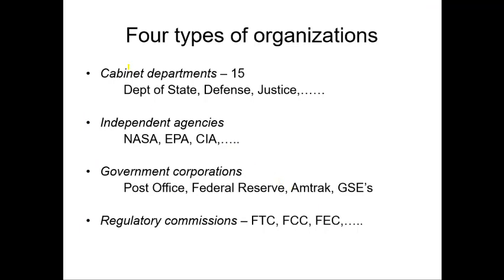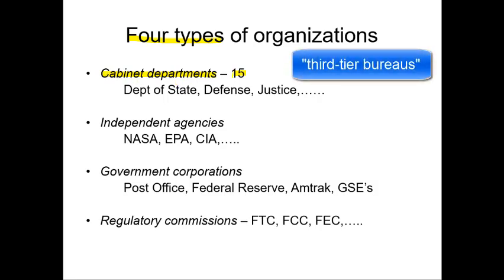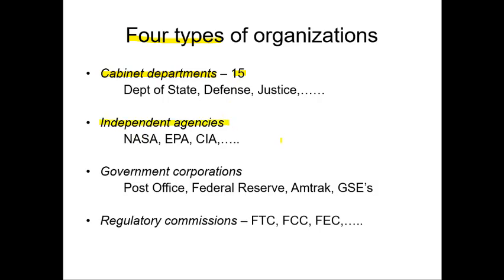There are four basic types of organizations in the bureaucracy — the executive branch. First, cabinet departments, and there are 15 cabinet-level departments. Second, independent agencies in the executive branch. Third, government corporations — the post office is one of those. And fourth, regulatory commissions. We'll look at each of those in more detail.